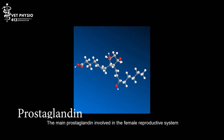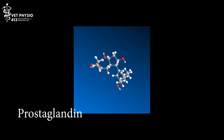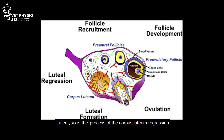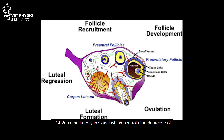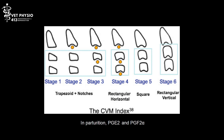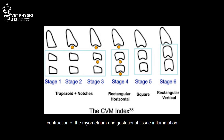Prostaglandin. The main prostaglandin involved in the female reproductive system is prostaglandin F2-alpha, more specifically in lutolysis and parturition. Lutolysis is the process of corpus luteum regression if fertilization does not take place. Prostaglandin F2-alpha is the lutolytic signal which controls the decrease of progesterone secretion and the regression of corpus luteum structures. In parturition, prostaglandin F2-alpha and prostaglandin E2 are involved in cervical maturation, rupture of the membrane, contraction of the myometrium, and gestational tissue inflammation. Thank you.